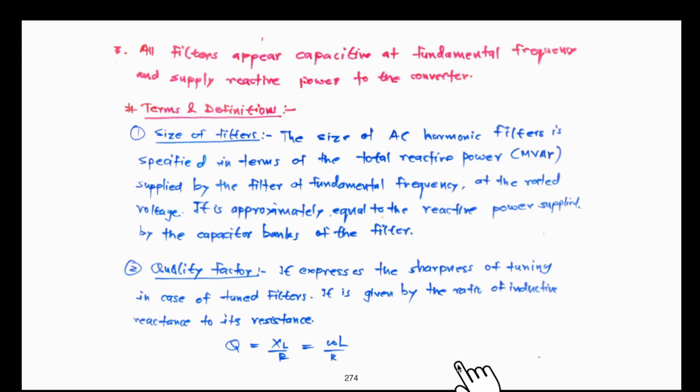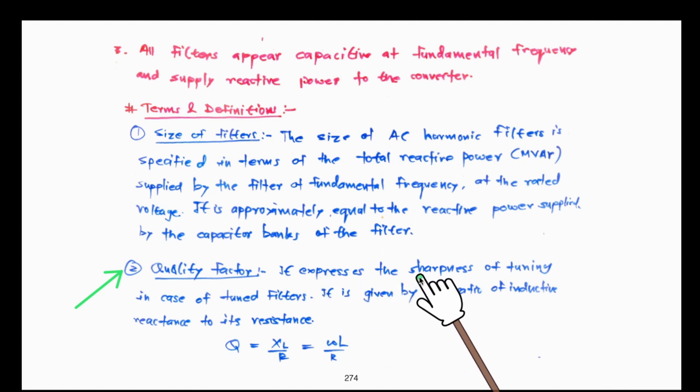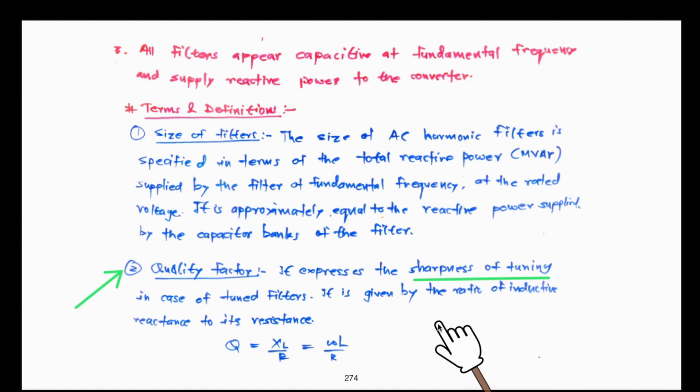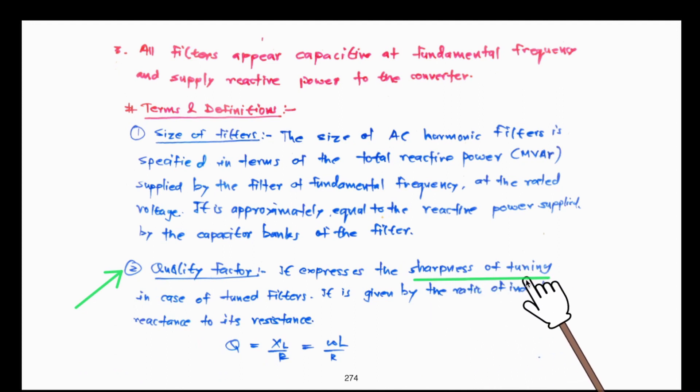The next important term is the Q factor or quality factor. Since we want to eliminate a selective frequency — say the 11th or 13th order harmonic — the quality factor of the filter expresses the selectiveness or sharpness of tuning. The filter is connected in the circuit to eliminate the 11th harmonic; how precisely the filter selects that particular frequency and eliminates it by providing a low impedance path is determined by the Q factor.